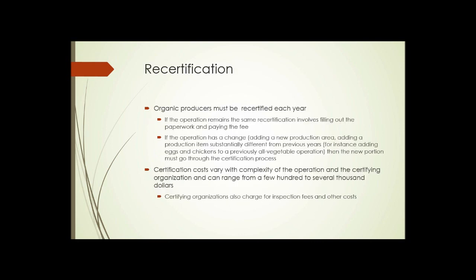Organic producers have to be recertified each year. If the operation remains the same, recertification basically involves filling out the paperwork and paying the fee. If the operation has a change — say you've added a new production area or a new field to your farm, or you've added a production item substantially different from previous years, for instance you've been selling vegetable produce and now you've decided to add eggs and chicken — then the new portion has to go through the complete certifying process, including the plan, the paperwork, the fees, and the certifying body.